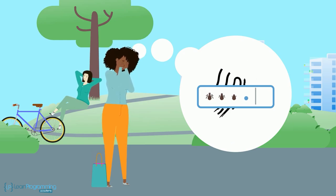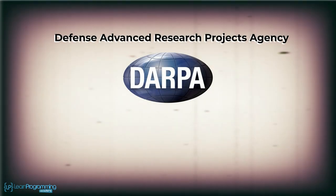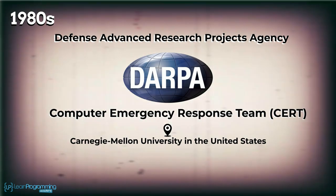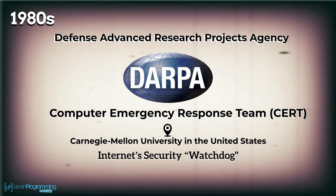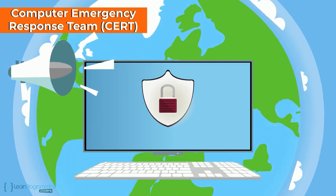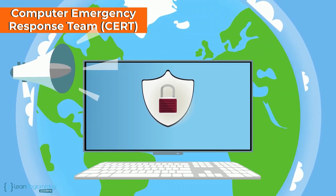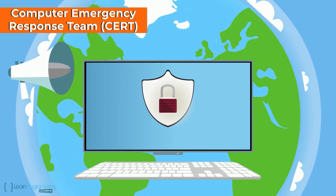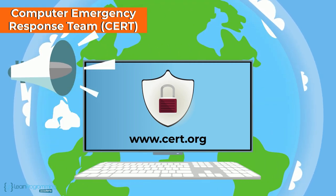In an earlier video, I mentioned an organisation named DARPA. In the late 1980s, it created the Computer Emergency Response Team, CERT, located at Carnegie Mellon University in the United States, to be the internet's security watchdog. This organisation makes the public aware of internet security topics and issues. Its website is www.cert.org.